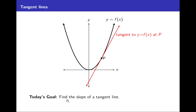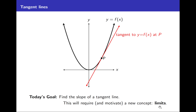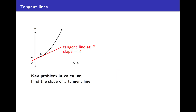Today's goal is to find the slope of the tangent line — a key problem in calculus. And in so doing, this will require and also motivate a new concept called limits. Finding the slope of a tangent line at a point p is problematic because to find slope you need two points on a line to calculate rise over run. The most immediate information you have is a single point on the curve that the tangent line passes through. You don't have another point q on the tangent line, so you can't compute rise over run.